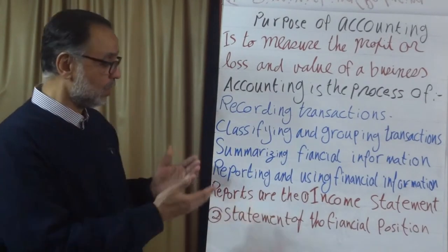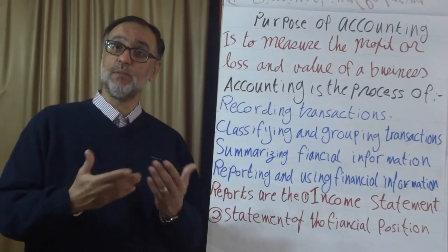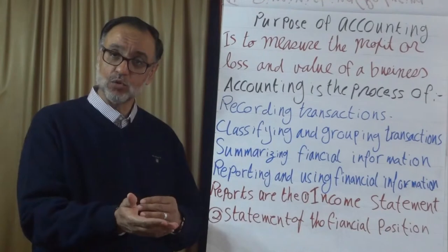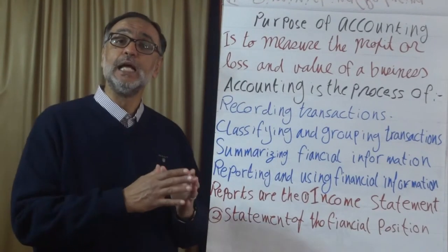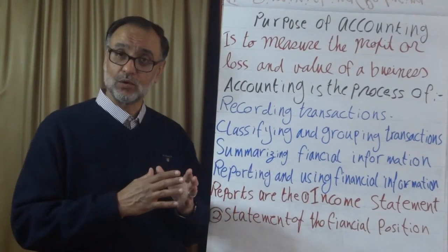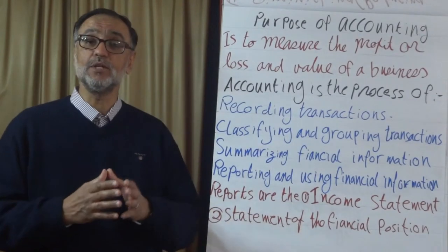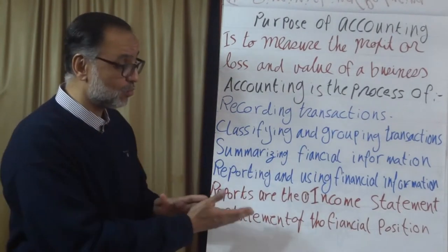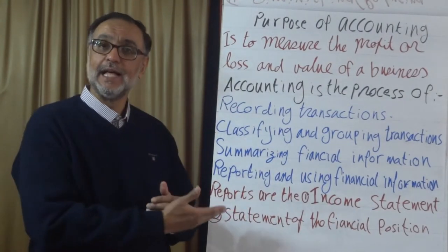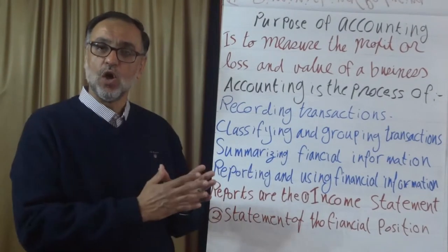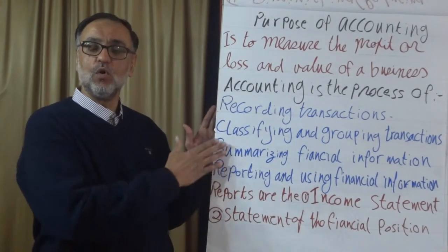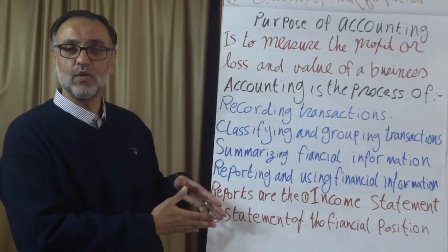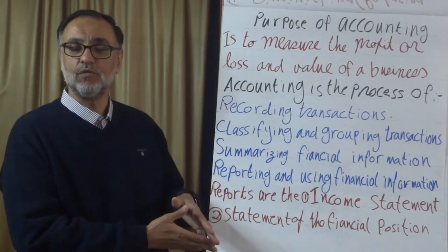Then we need to do the fourth step: reporting and using the financial information. We produce reports and use them to help make decisions. The most important outputs in the form of reports are the income statement, which tells us the profit or loss of the organization, and the statement of financial position, which tells us the value of the business. Our study will be focused on how to perform all four steps and how to produce these two key statements.